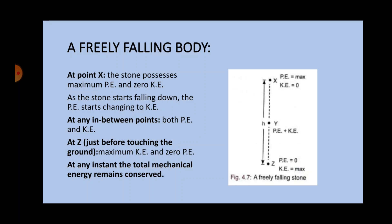The next example is a freely falling body. Let us suppose that a stone is dropped from the roof of a house, say point X. When the stone is at point X, it possesses maximum potential energy and zero kinetic energy. As the stone starts falling down, the potential energy changes to kinetic energy. When the stone reaches point Z, that is just before touching the ground, it has maximum kinetic energy and zero potential energy — the whole of the potential energy has now changed to kinetic energy.